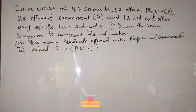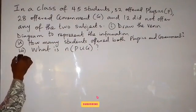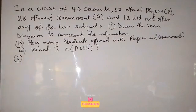It says, in a class of 45 students, 32 offered physics, 28 offered government, and 12 did not offer any of the two subjects. Then we have to draw the Venn diagram to represent the information, that's the first question there.